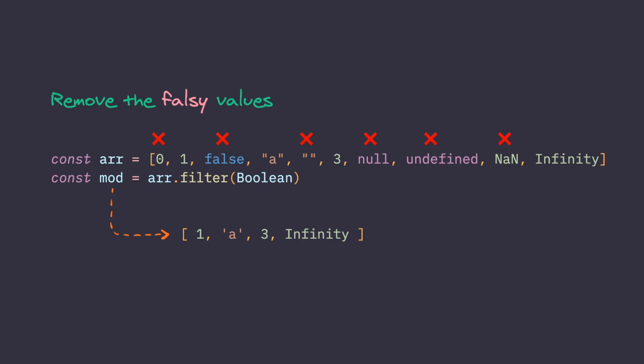So to filter out those falsy values we'll use a filter function on the array, and instead of a properly defined callback function we pass the Boolean constructor which will basically iterate over each element and return true or false based upon the condition.